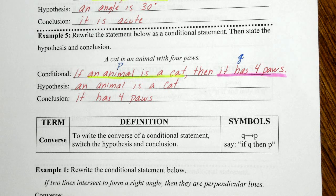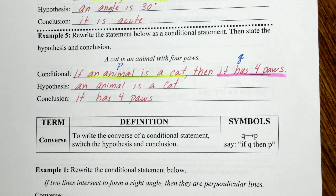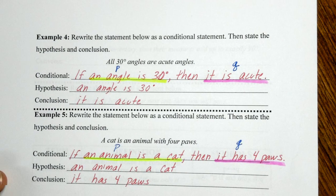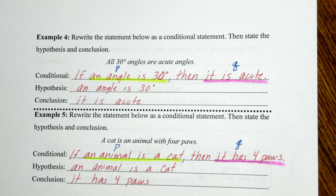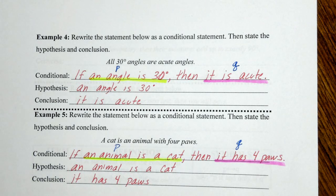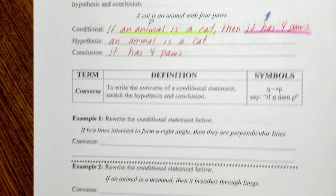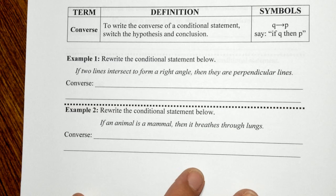This is probably one of the hardest things for students to do because they have to figure out how to make the sentence make sense and split the two parts. With 'a cat is an animal and four paws,' you need to see the two separate parts so you can reword with 'if' and 'then.' Similarly, '30-degree angles' goes in the hypothesis and 'acute' goes in the conclusion — two separate chunks.